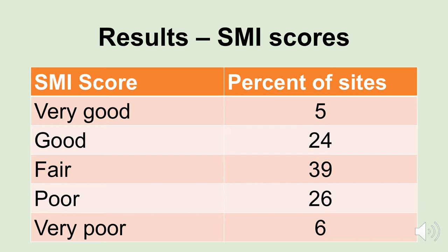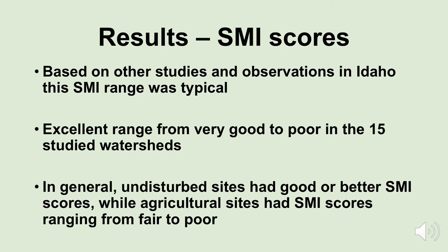5% of our sampling sites rated as very good water quality; 24% received good water quality scores; 39% got only fair water quality scores; 26% received poor scores; and 6% got very poor scores. Based on other studies and observations in Idaho, the benthic macroinvertebrate index range we got was very typical — there was an excellent range from very good to poor in the 15 studied watersheds. In general, the undisturbed sites where human activity was minimal had good or better SMI scores, while the agricultural sites had SMI scores that ranged only from fair to poor.